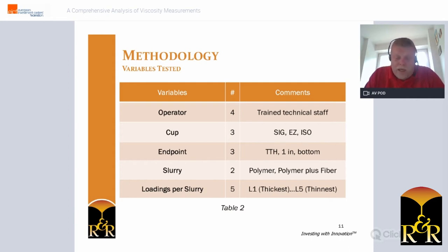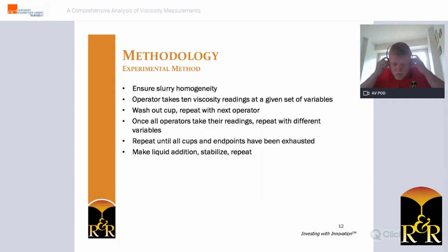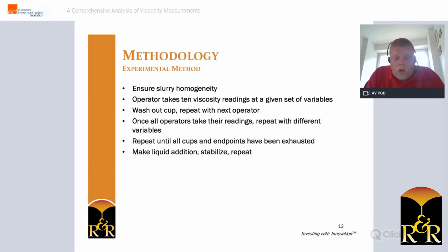All of these variables combined generated 2,800 different data points across the swath of tests. In total, the readings took nearly 13 hours alone just to complete. Our experimental method always ensured slurry homogeneity by taking 10 readings across various locations in the tank — if all 10 readings were within one second of each other, the slurry was considered homogeneous and testing could begin.